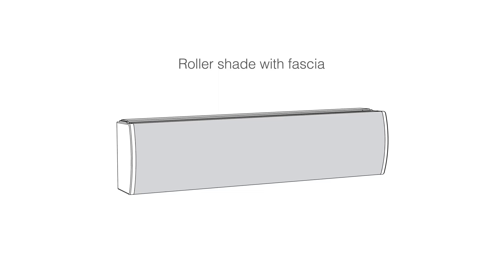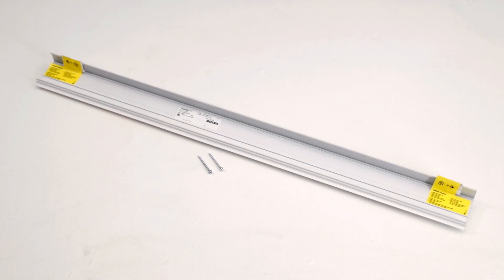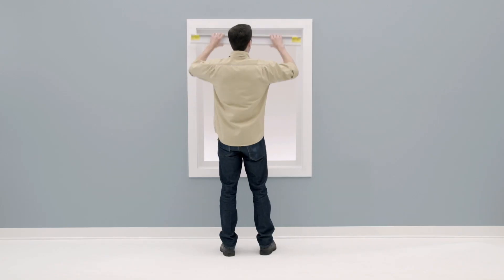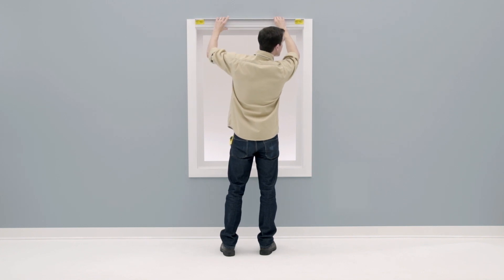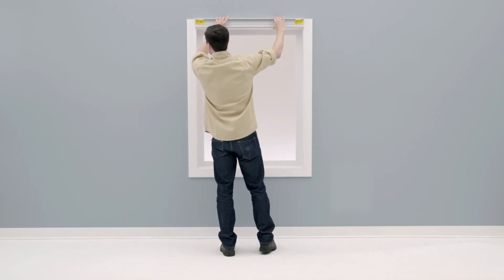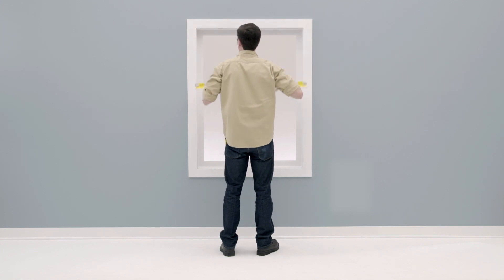If your shade has fascia, you'll need to install it using a mounting rail. First, hold the mounting rail up to the window, ensuring that it's level and centered. If the shade is an inside mount, make sure that there's sufficient clearance between each end of the mounting rail and the window frame. Shades with fascia require 1/4 inch of clearance.